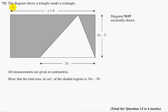Question 13. The diagram shows a triangle inside a rectangle. It's got the dimensions and it says all the measurements are given in centimeters. Show that the total area in centimeters squared of the shaded area is 18x minus 30.